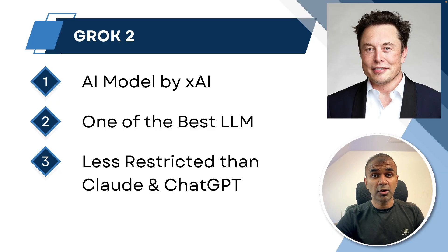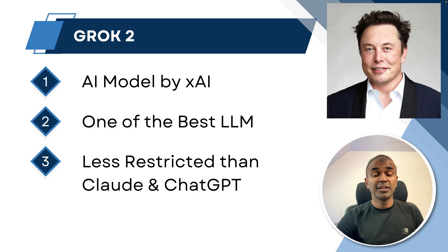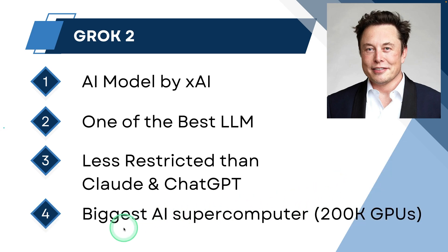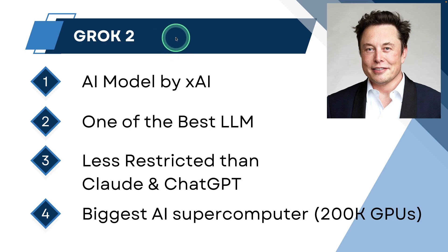So what is Grok? Grok2 is an AI model by XAI — it's Elon Musk's company. It's one of the best large language models, and it is less restricted than Claude and ChatGPT. They have built one of the biggest AI supercomputers, aiming to reach 200,000 GPUs, which means in a few months or years, Grok2 is going to get upgraded and it's going to be powerful.